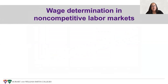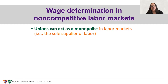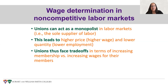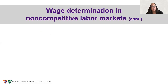The third topic is wage determination in non-competitive labor markets. One case is that there could be unions. A labor union can act as a monopolist in labor markets and serve as the sole supplier of labor if workers band together to act as one in negotiating with employers. This will in general lead to a higher price for labor — a higher wage — and lower quantity because labor demand will be lower at that higher wage. Unions face trade-offs in terms of increasing their membership versus increasing wages for their members.